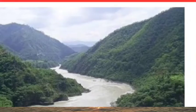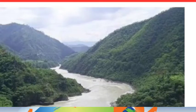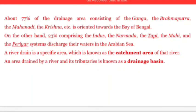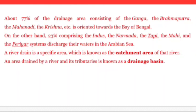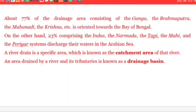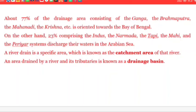About 77 percent of India's drainage area — consisting of the Ganga and other rivers — is oriented towards the Bay of Bengal. On the other hand, 23 percent, comprising the Indus, Narmada, Tapati, Mahi, and Periyar systems, discharge their waters into the Arabian Sea.